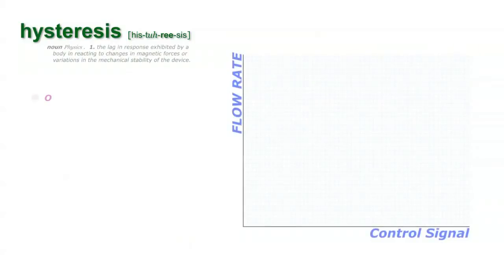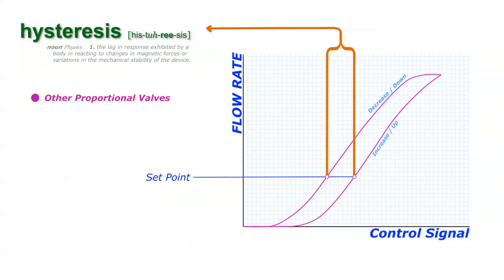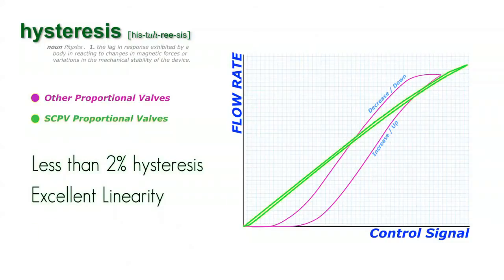Hysteresis can be a programmer's nightmare. Most proportional valves on the market come with mechanical or magnetic hysteresis that can cause different flow rates at the same set points. The SCPV has less than 2% hysteresis. It is essentially a needle valve that is repeatable in its flow whether you're opening or closing the valve to reach the same point.